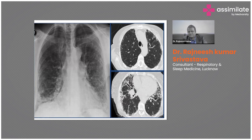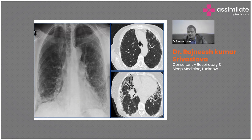Traction bronchiectasis occurs because fibrosis pulls on and dilates the airways. On CT, we can see dilated airways, septal thickening, and honeycombing. The arrows indicate dilated airways in the periphery. These are the key CT features of ILD — septal thickening, traction bronchiectasis, and honeycombing — which we will learn in more detail.